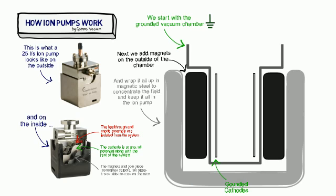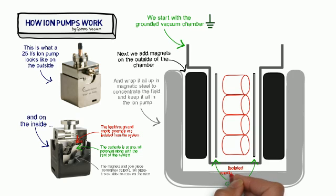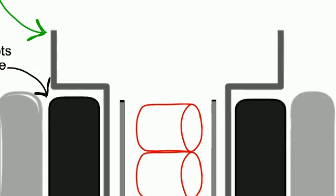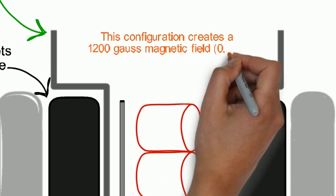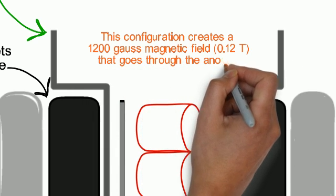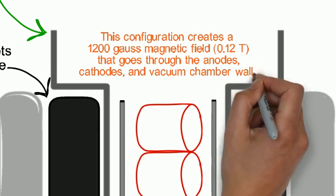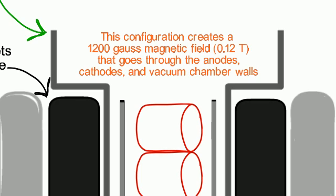And internal to that, we are actually going to start drawing our electrically isolated anode rings. And if we go ahead and take a close look at this, you'll see that in this configuration, that strong magnetic field between those two magnets at about 0.12 Tesla goes through the anodes, cathodes, and the vacuum chamber walls.